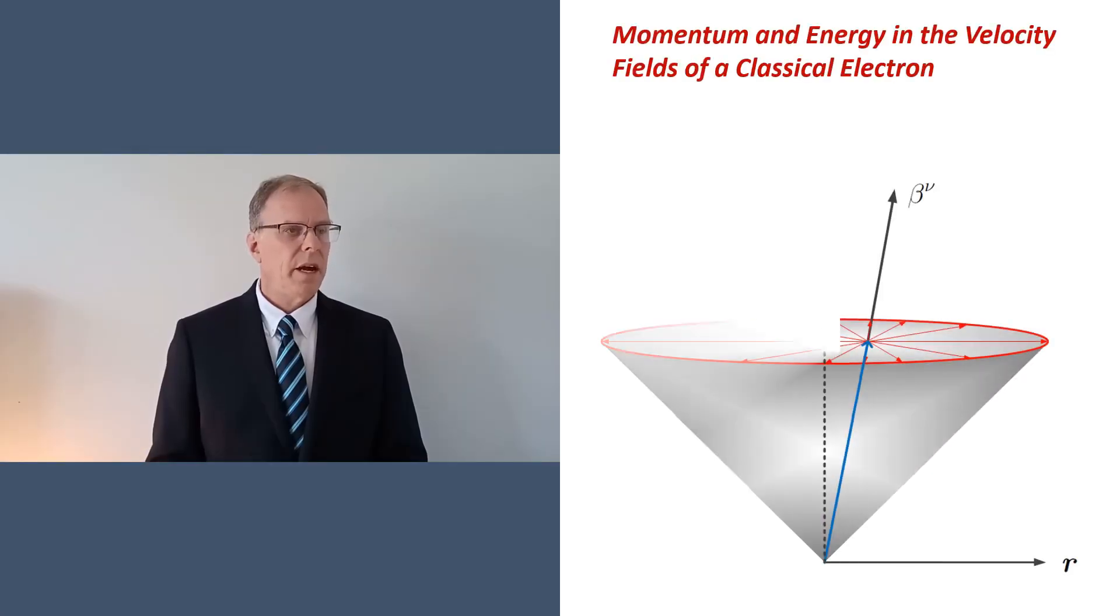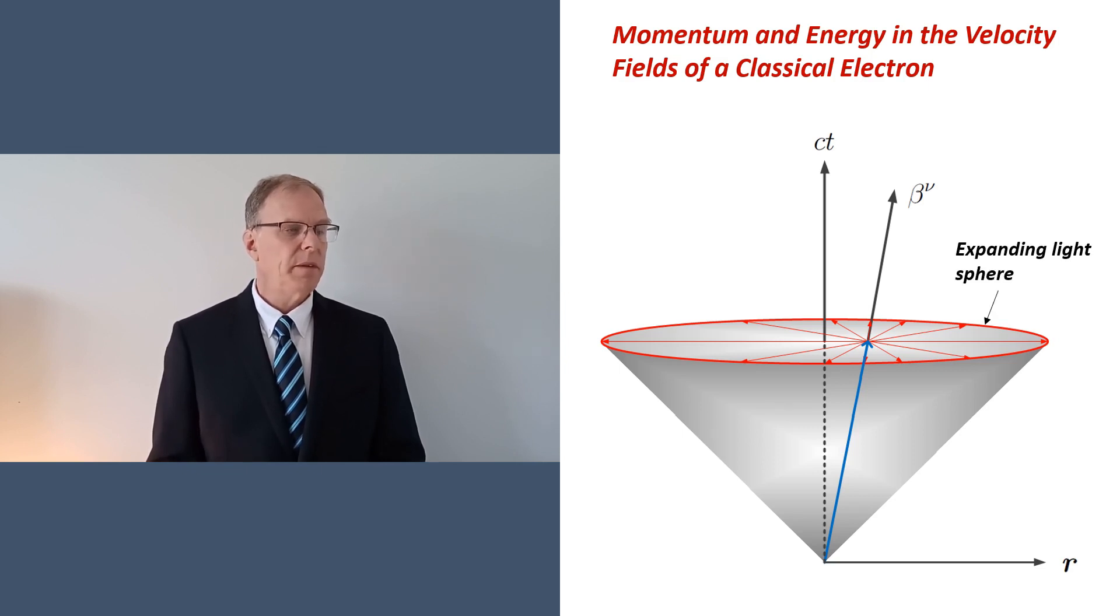This spacetime diagram shows an electron born at the origin of a coordinate system and moving to the right at constant velocity. In this picture of the electron, causality demands that the velocity fields must be contained within a sphere moving away from the source at light speed. The implication is that the velocity fields must be carriers of momentum and energy.